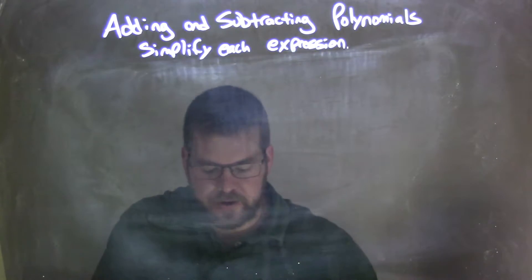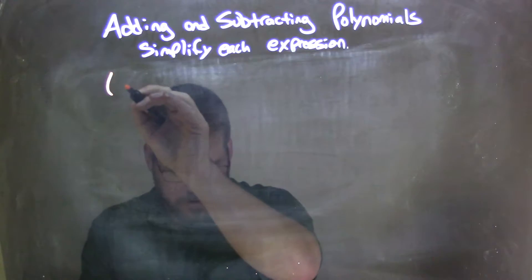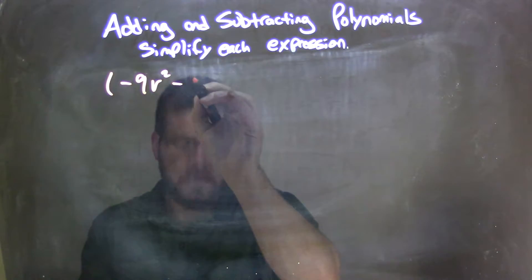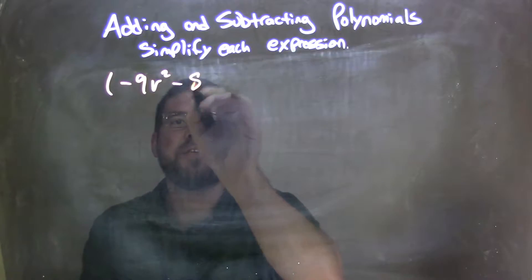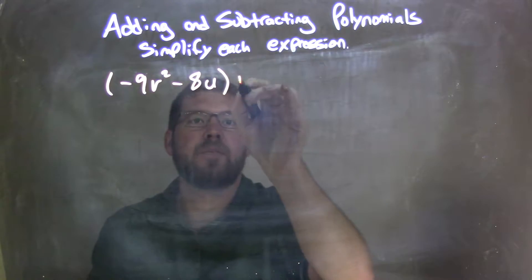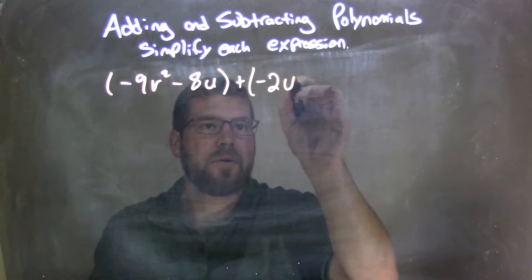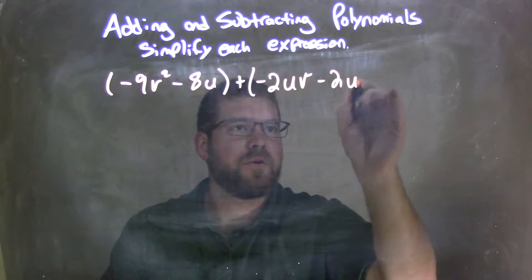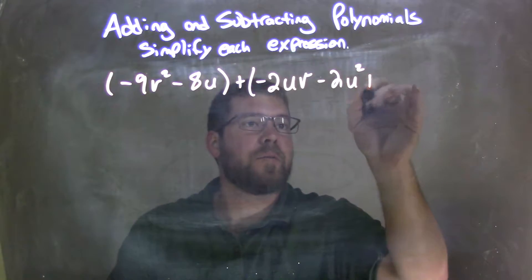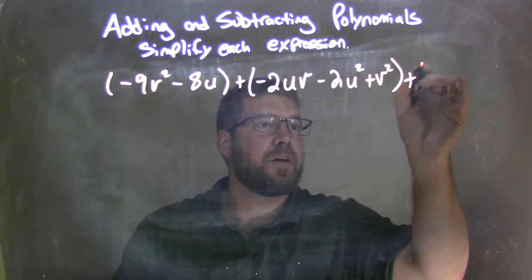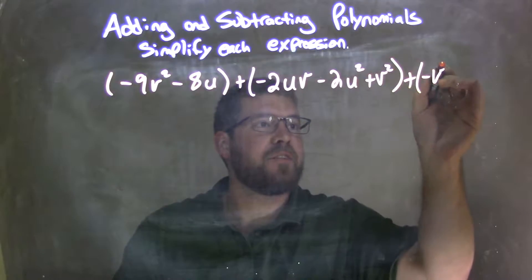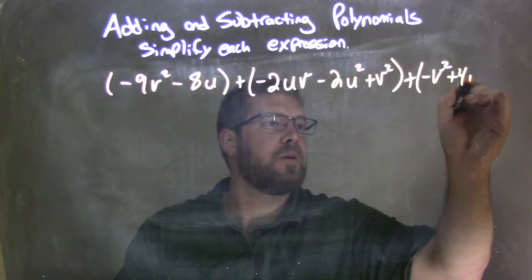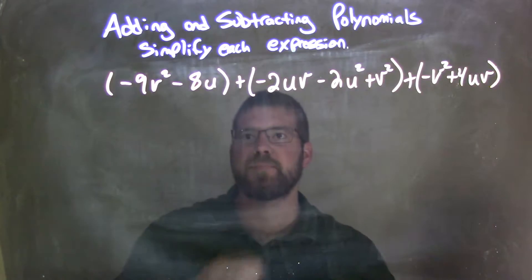So if I was given this expression here: parentheses, negative 9v squared minus 8u, end parentheses, plus parentheses negative 2uv minus 2u squared plus v squared, end parentheses, plus negative v squared plus 4uv. Just barely got it all in there, okay?